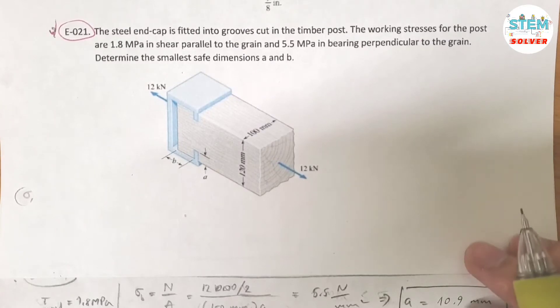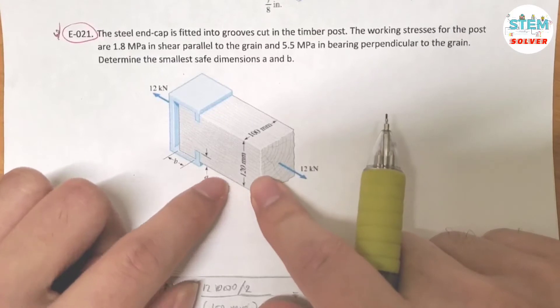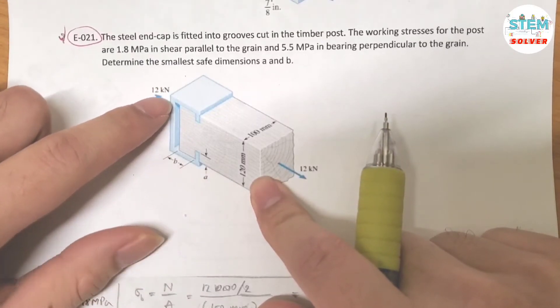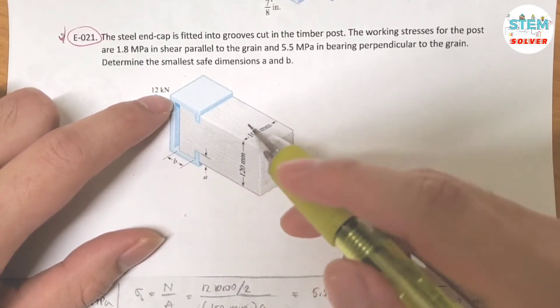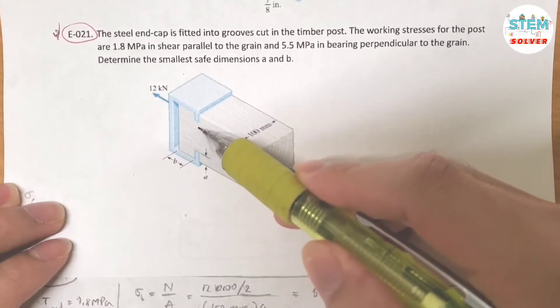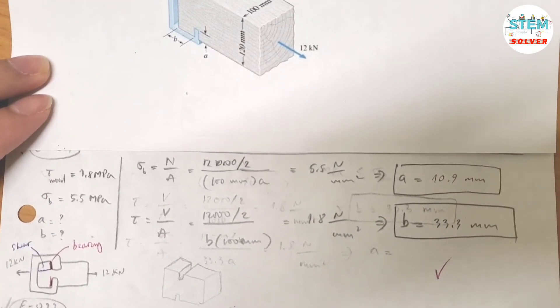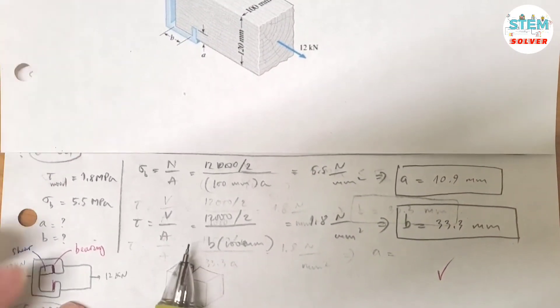So, you have the grooves cut. Actually you have a timber post and this is the end cap. So, it's fitted into this groove. If I draw a free body diagram for this one, it would look like this. Here's a free body diagram for it.